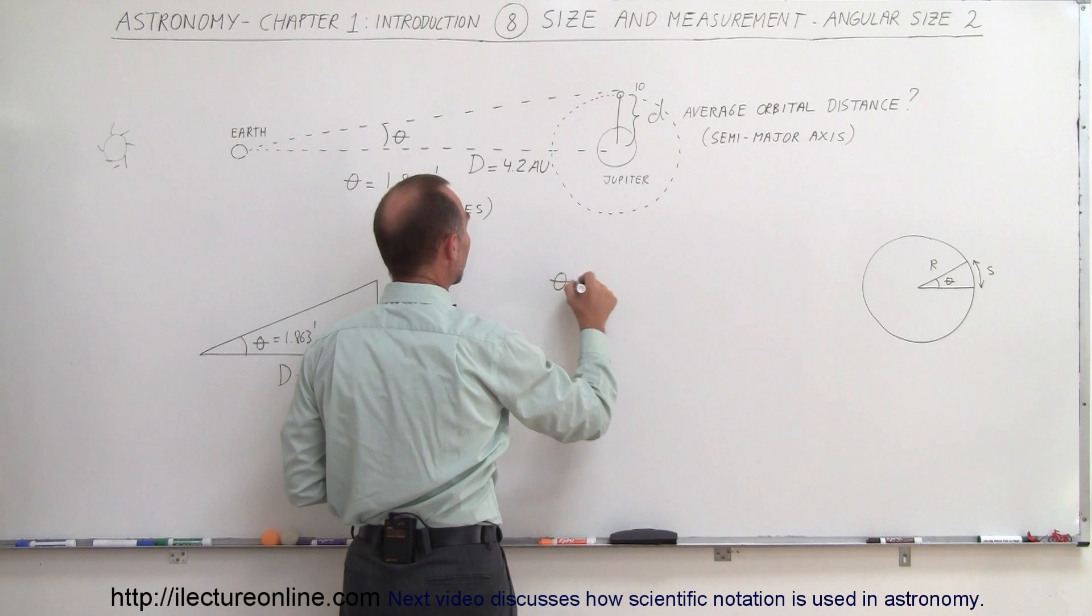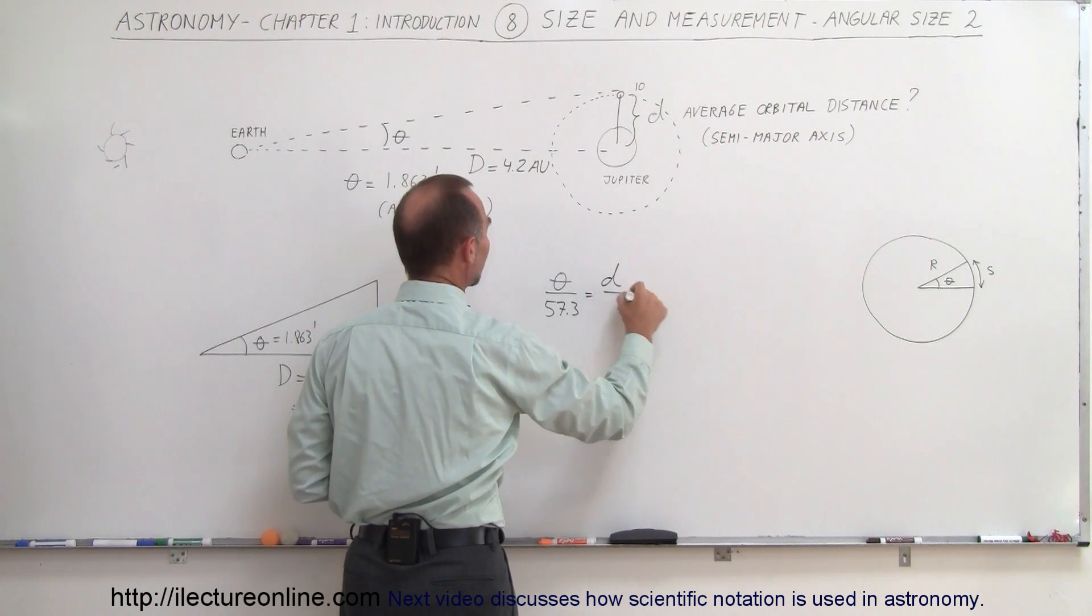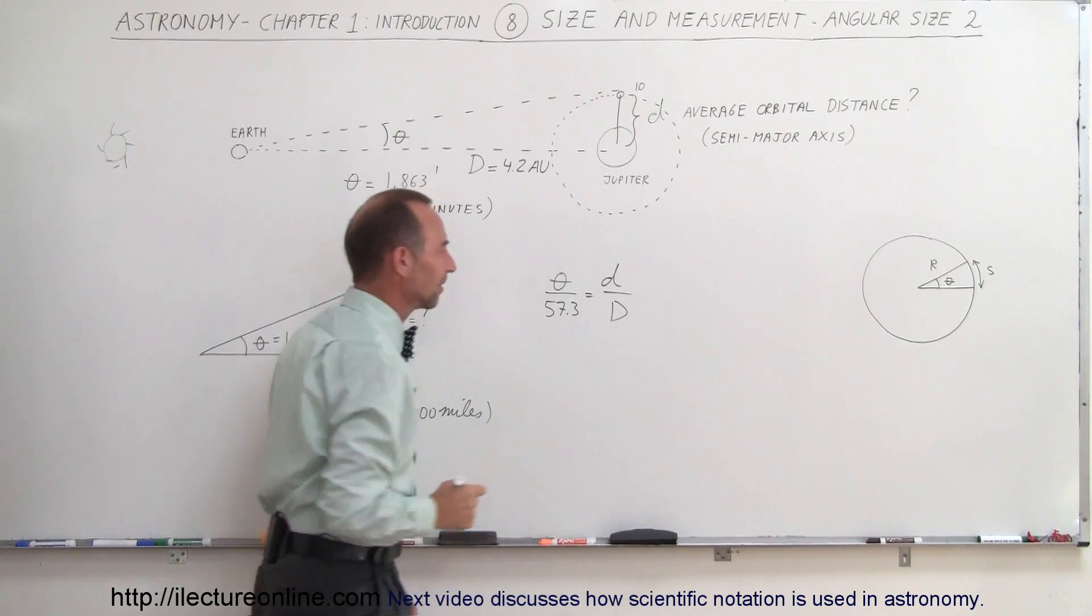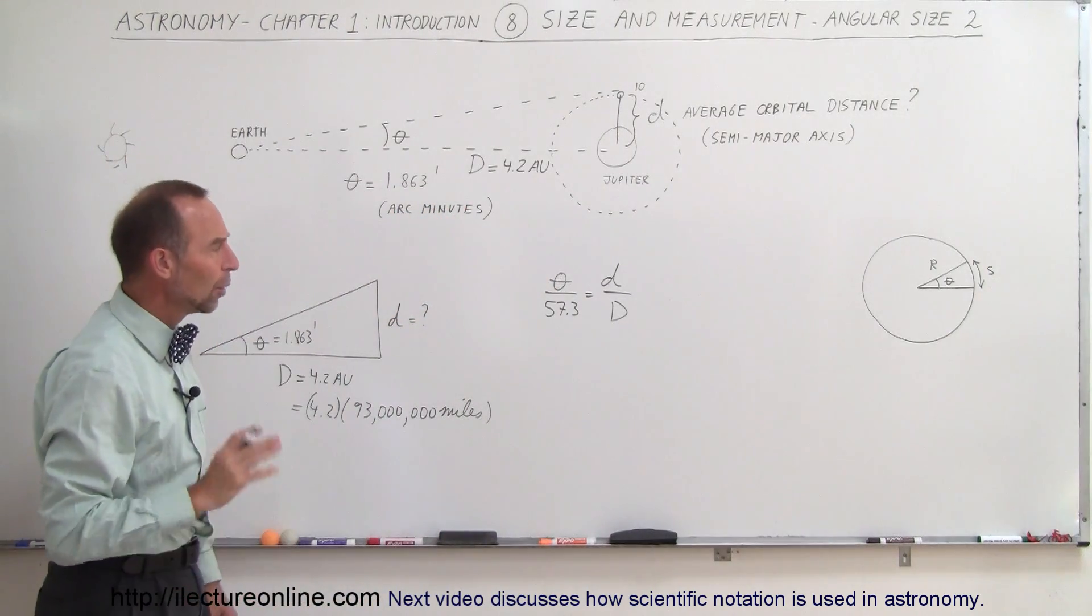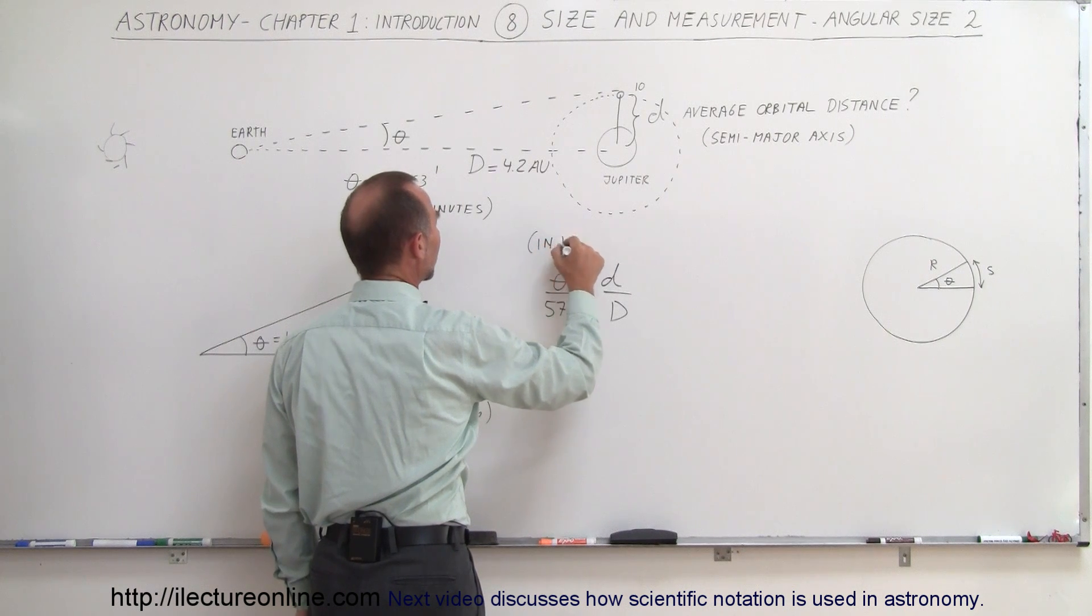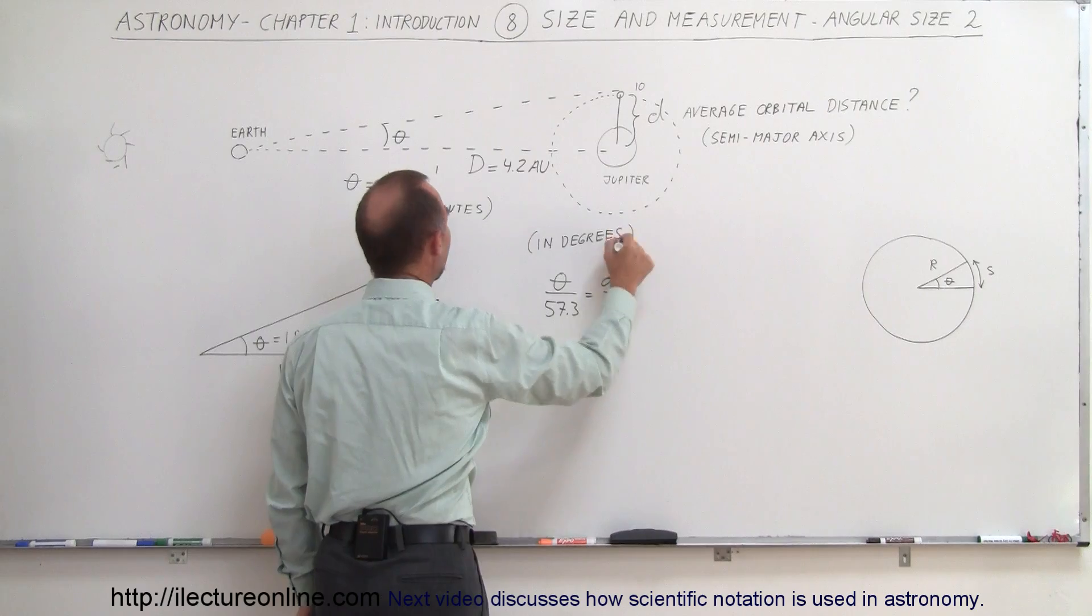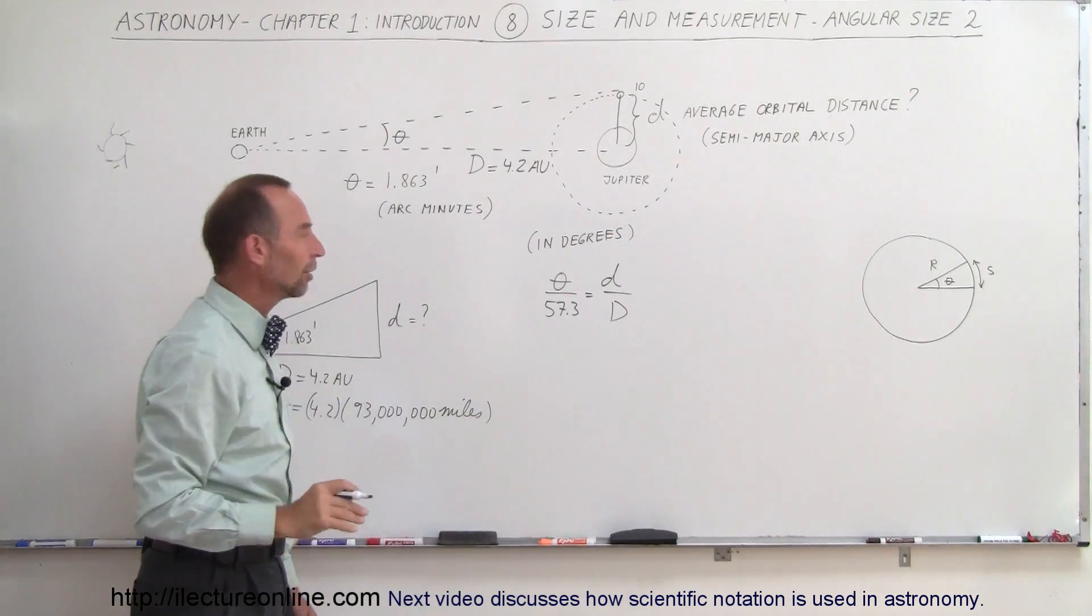And the equation we use is this. We can say that the angle divided by 57.3 is equal to the ratio of small d over big D. So, wow, where did that equation come from? Well, that is if we use the angle in degrees. So that means we would have to convert the angle from arc minutes to degrees, and we'll do that in just a moment.